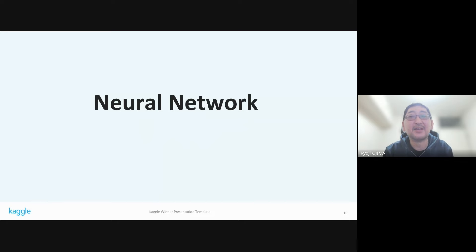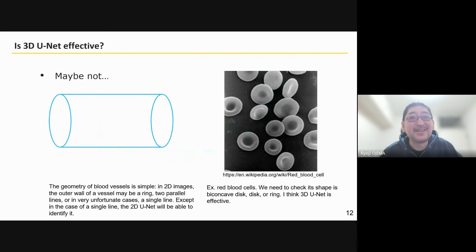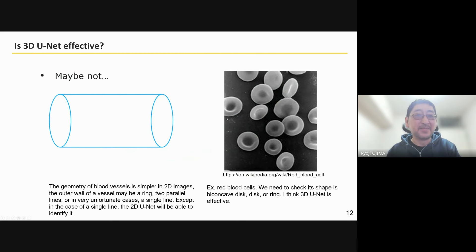Now, about the neural network. I chose 3D UNet. However, I don't think 3D UNet was particularly effective for this competition. The shape of the blood vessel is a tube, and there are no large structures other than blood vessels in the kidney. I think 3D would be more useful to determine the shape of something like a red blood cell — whether it was a disc, a ring, or a red blood cell shape.